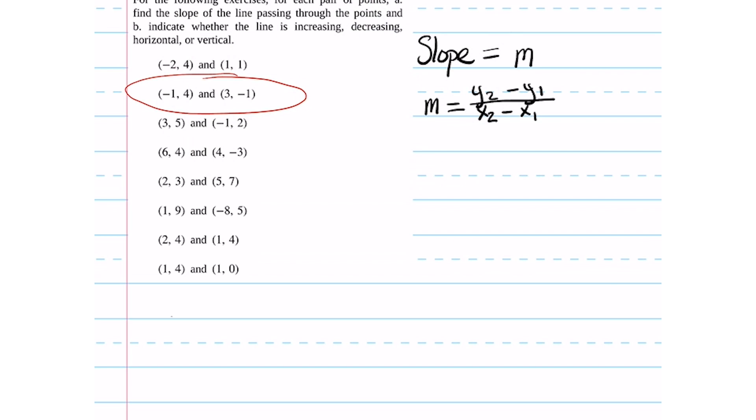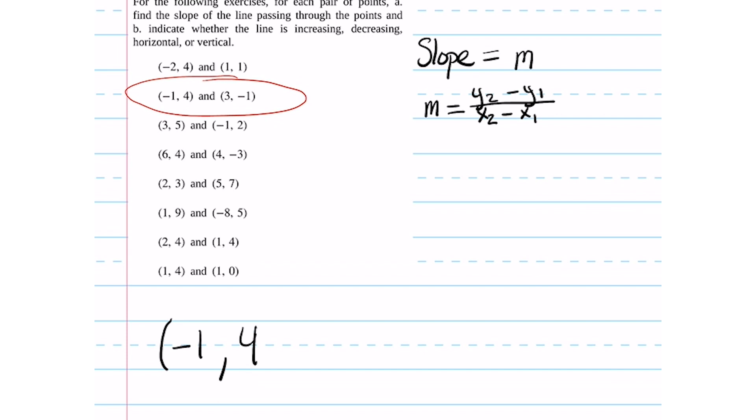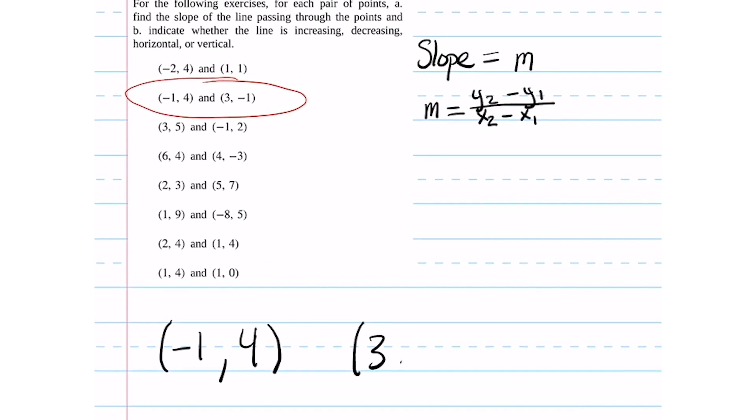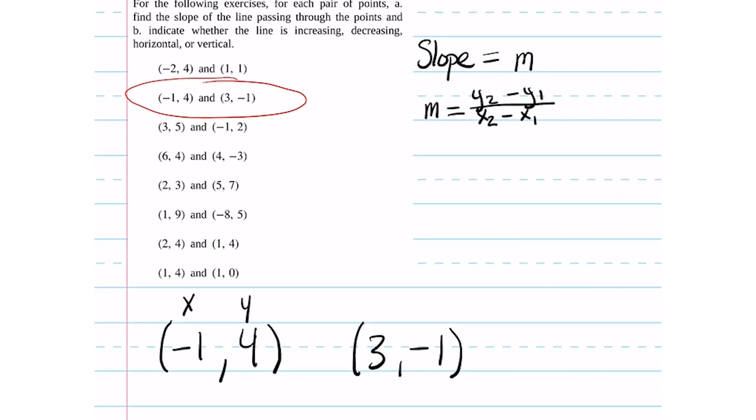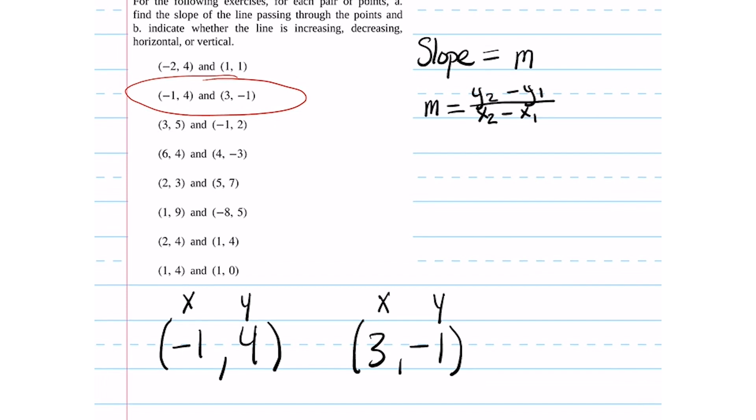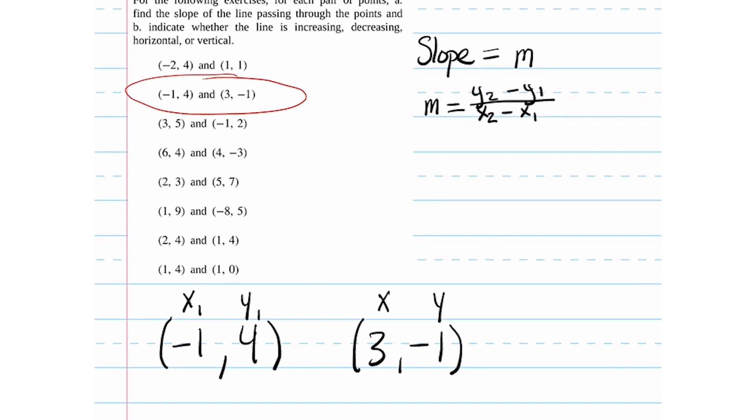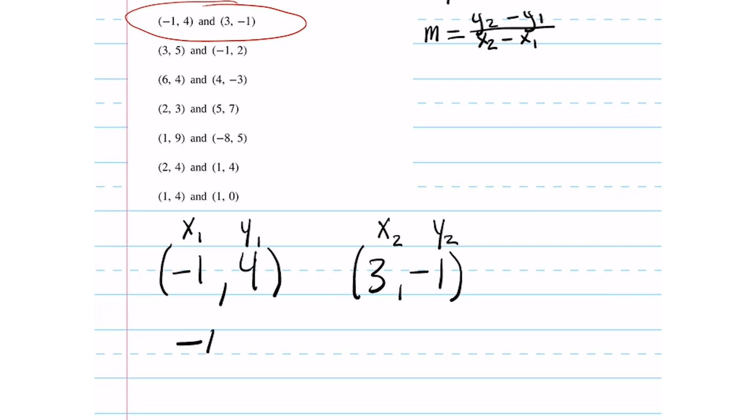Our next set of points is negative one, four and three, negative one. So again, we'll start by writing out our points and labeling our x's and y's. Then we can plug it into our slope equation.